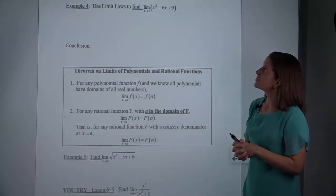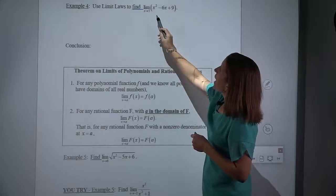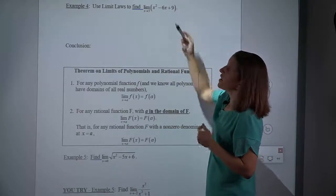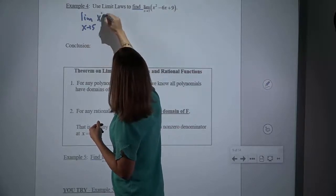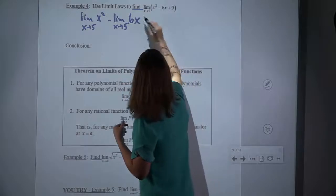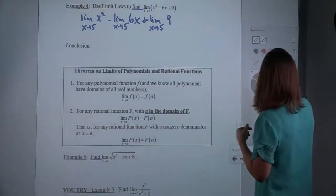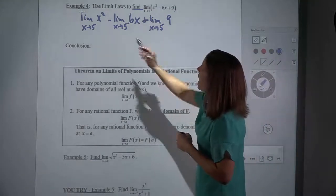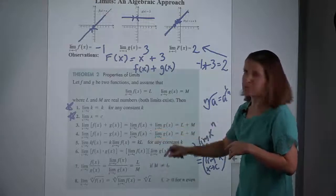If we're actually going to apply the limit laws, we had one law that said if you have things added and subtracted together, you can take the limit of each piece and then evaluate it. So the first step is we're going to do the limit as x approaches 5 of the first term, minus the limit as x approaches 5 of the second term, plus the limit as x approaches 5 of the last term. That was rules three and four — if you had things added or subtracted together, you could put the limit sign with each one.